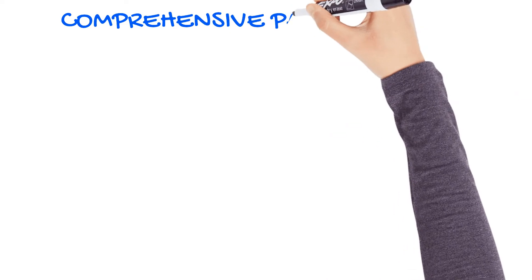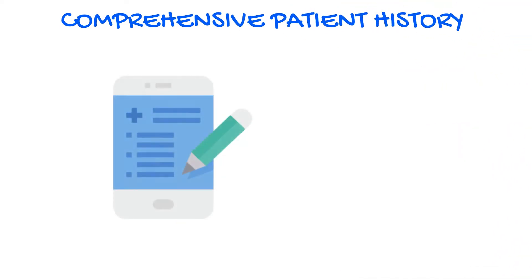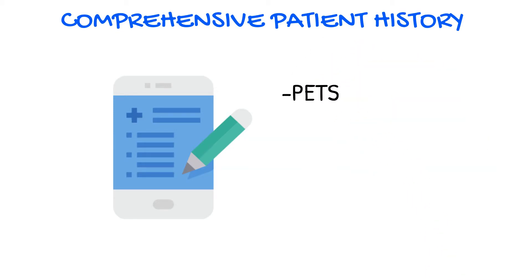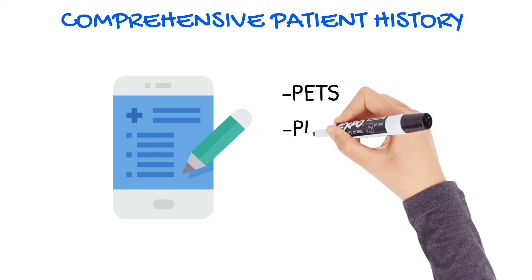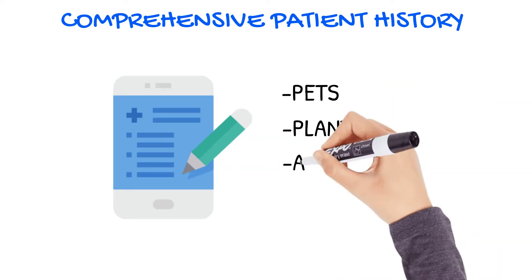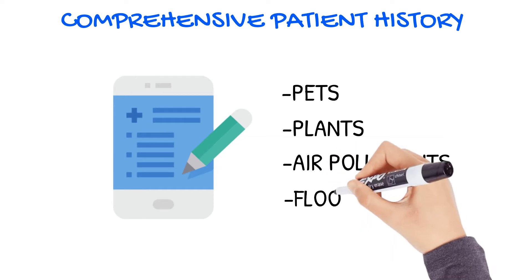You'll need to obtain a comprehensive patient history which includes asking them certain things about their environment, such as if they have any pets, what sort of plants they're typically around at work or at home, any air pollutants, and what type of floor coverings are in their home or workplace.